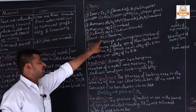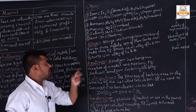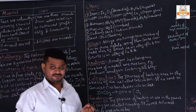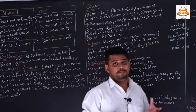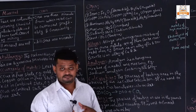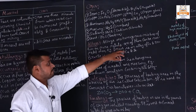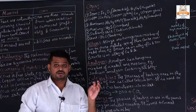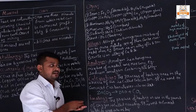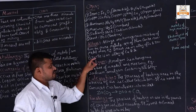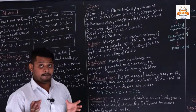Alloys are a homogeneous mixture of two or more metals, where one of them can also be a non-metal, forming a new type of compound. For example, brass is an alloy of copper and zinc. Bronze is another example of an alloy formed by combining two metals.